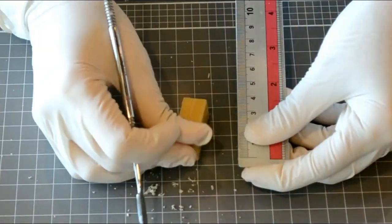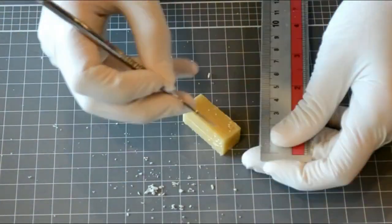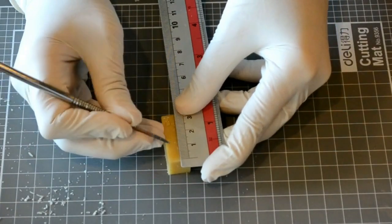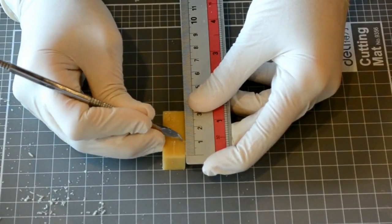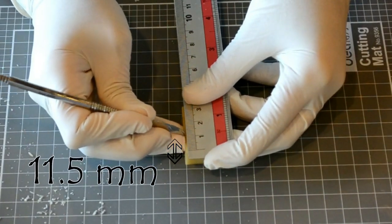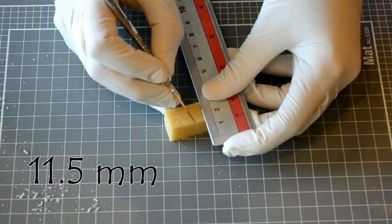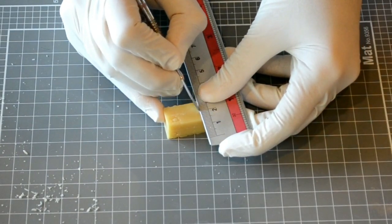Now you can start placing your measurements on each aspect using the lecron carver and ruler. Let's start with the buccal aspect. Using the incisal edge of the wax block as reference, measure 11.5 millimeters at the center of the buccal aspect to mark the length of the tooth.